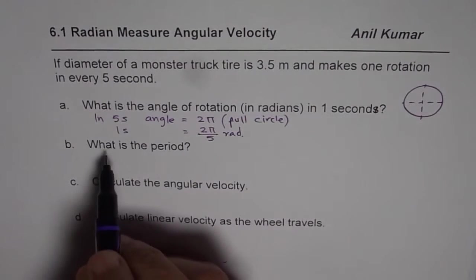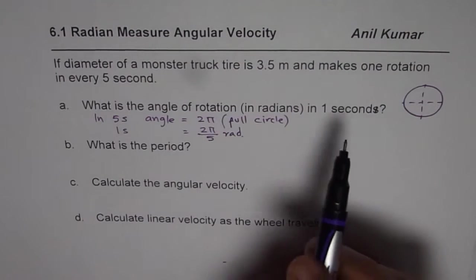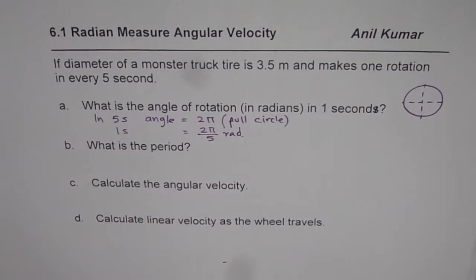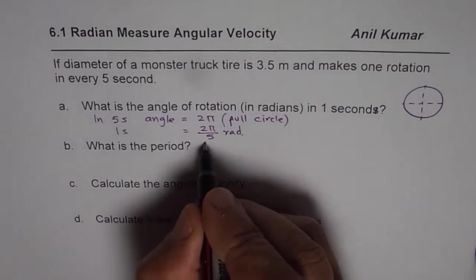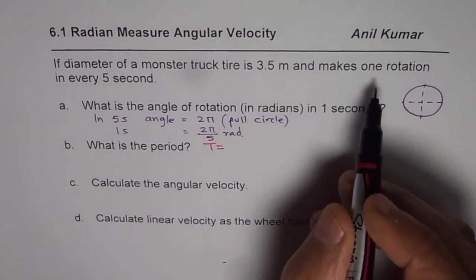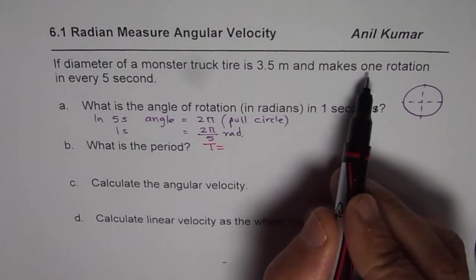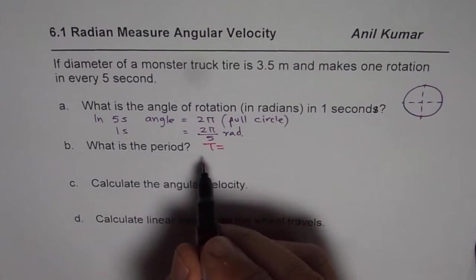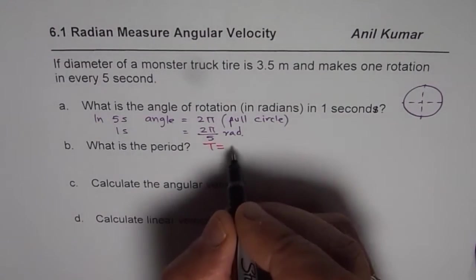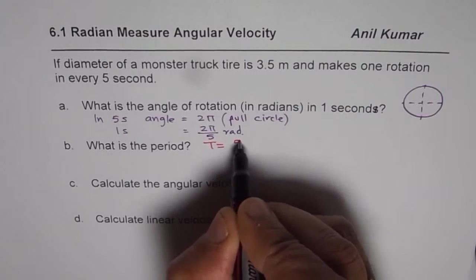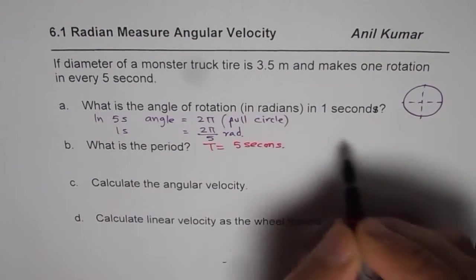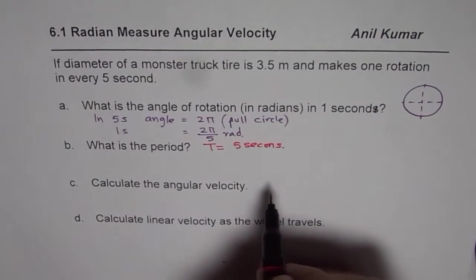Next question is, what is the period? Now, for this movement, we know time is, we can say that the time is equal to one rotation in five seconds, correct? So what is the period? Time period for this is five seconds. Since one rotation takes five seconds. That is the straightforward question.